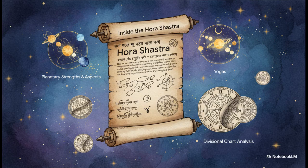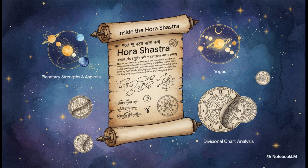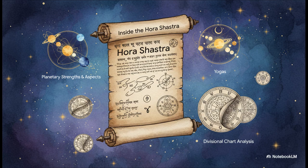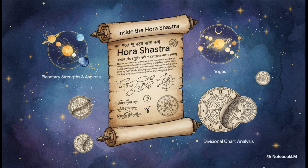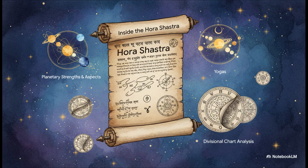It really is a complete operating manual for the cosmos. It gets into everything from how to calculate planetary strengths with mathematical precision, to defining hundreds of special planetary combinations called yogas. You can think of those as specific cosmic alignments that point to certain events. It's just unbelievably deep.